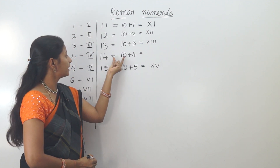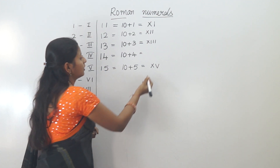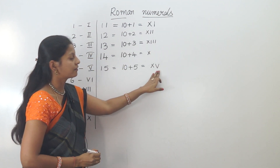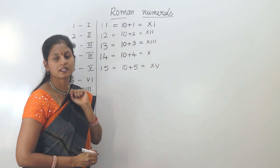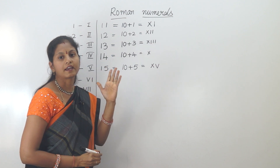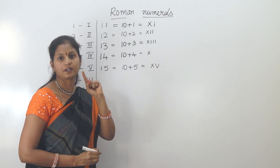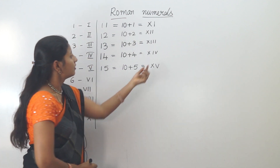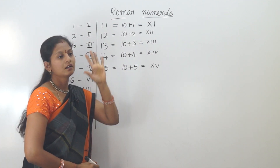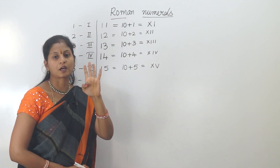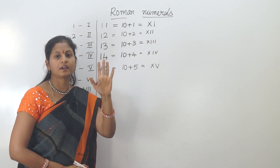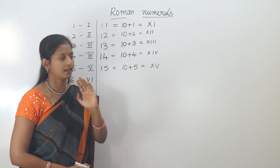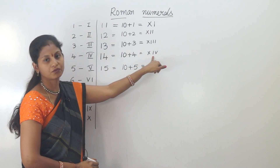Now, 14 is 10 plus 4. Here, 5 minus 1 gives 4. So we use V (which is 5) and subtract 1 from it to represent 4.